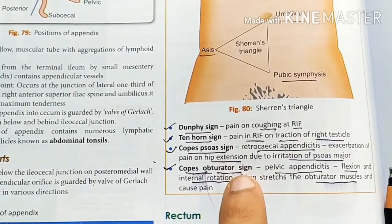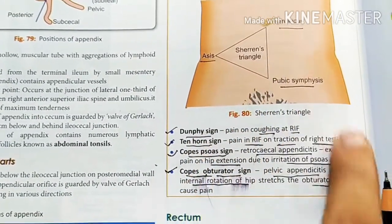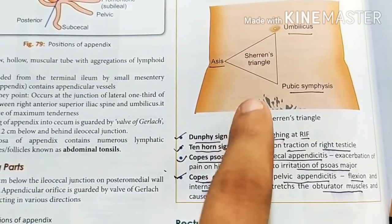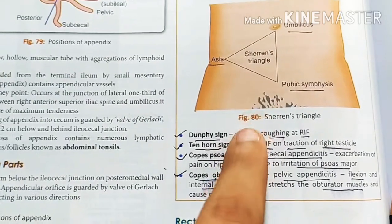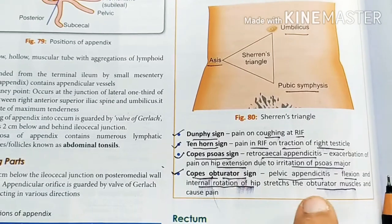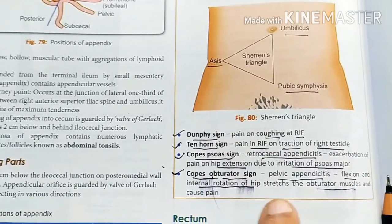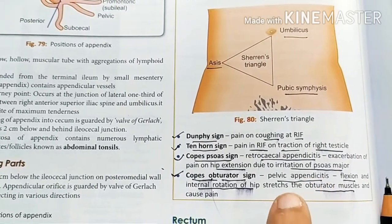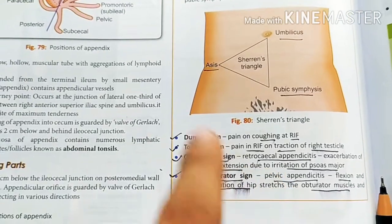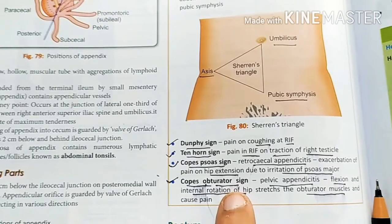Next is Cope's obturator sign. The obturator muscles are located on the medial side of the hip. Because of the stretching of the obturator muscle, you get pain. This stretching occurs due to internal rotation of the hip. When you internally rotate the hip, you get Cope's obturator sign.